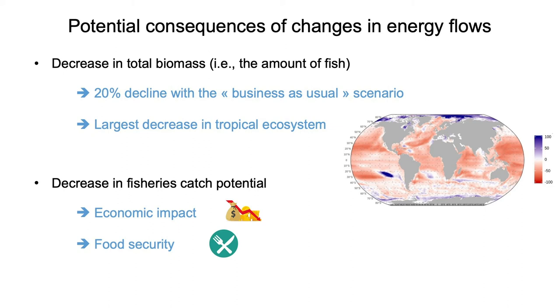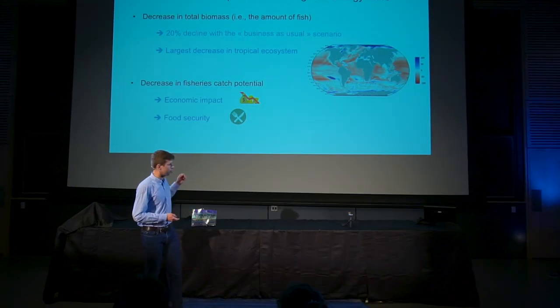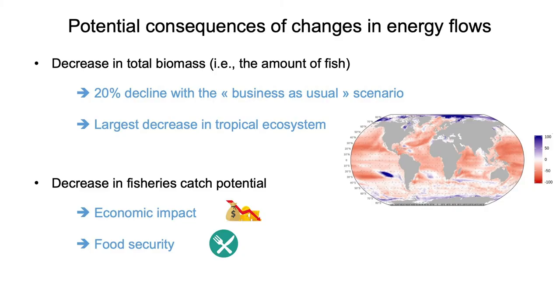For example, in this map, you can see the resulting change in abundance of marine species. In red, the decrease, and in blue, the increase. And finally, the consequences of these changes in abundance on fisheries can be also very important with the decrease in fisheries catch potential, with economic impacts, but also food security issue in many countries, and especially where food protein is a key resource.